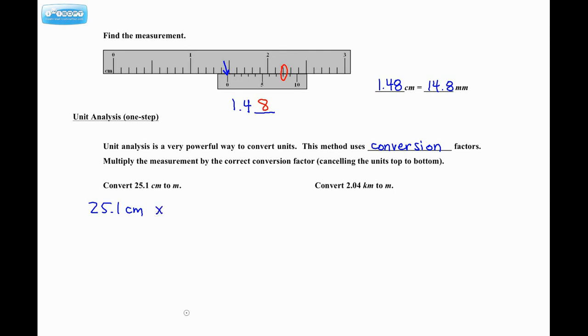So to begin with, just write out the measurement that's given that we want to convert, and then we start multiplying. These are all one-step problems, so we're actually only going to have to multiply by one conversion factor. Well, what's a conversion factor? Think about it. Centimeters to meters. What's the connection between those two units? How many centimeters are in a meter? Well, you should know that there are 100 of them. So to write it as a conversion factor, we put 100 centimeters on the bottom, and then on top we put one meter. These are equivalent to each other.